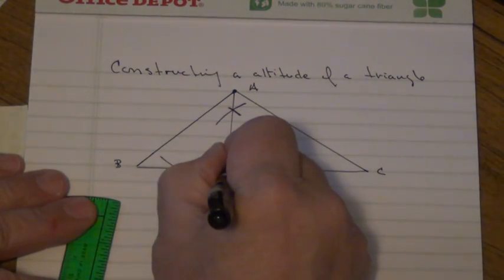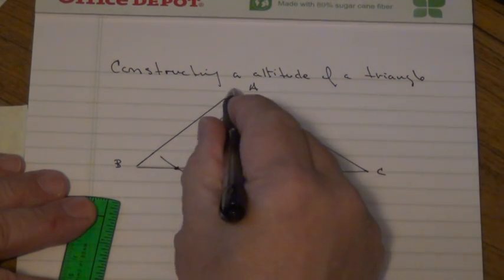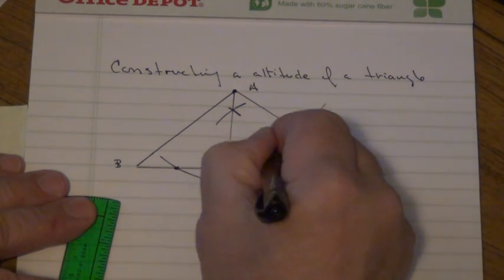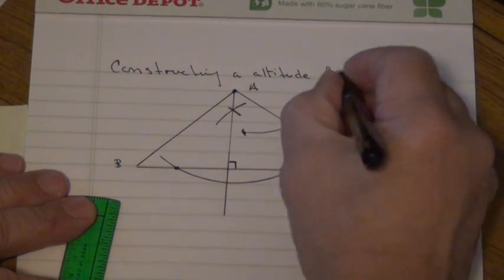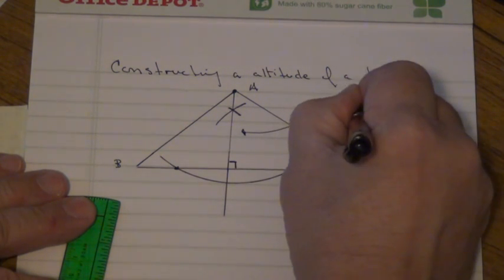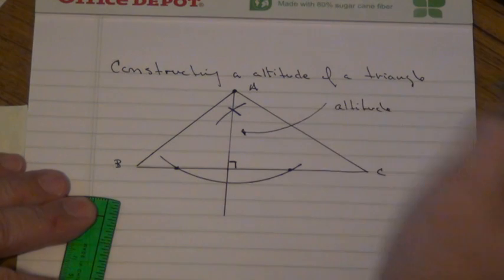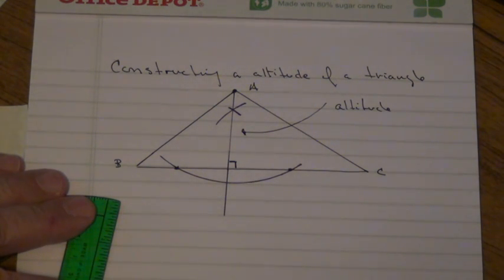Then that means this is a right triangle, and so that's the altitude of the triangle - one of the altitudes.